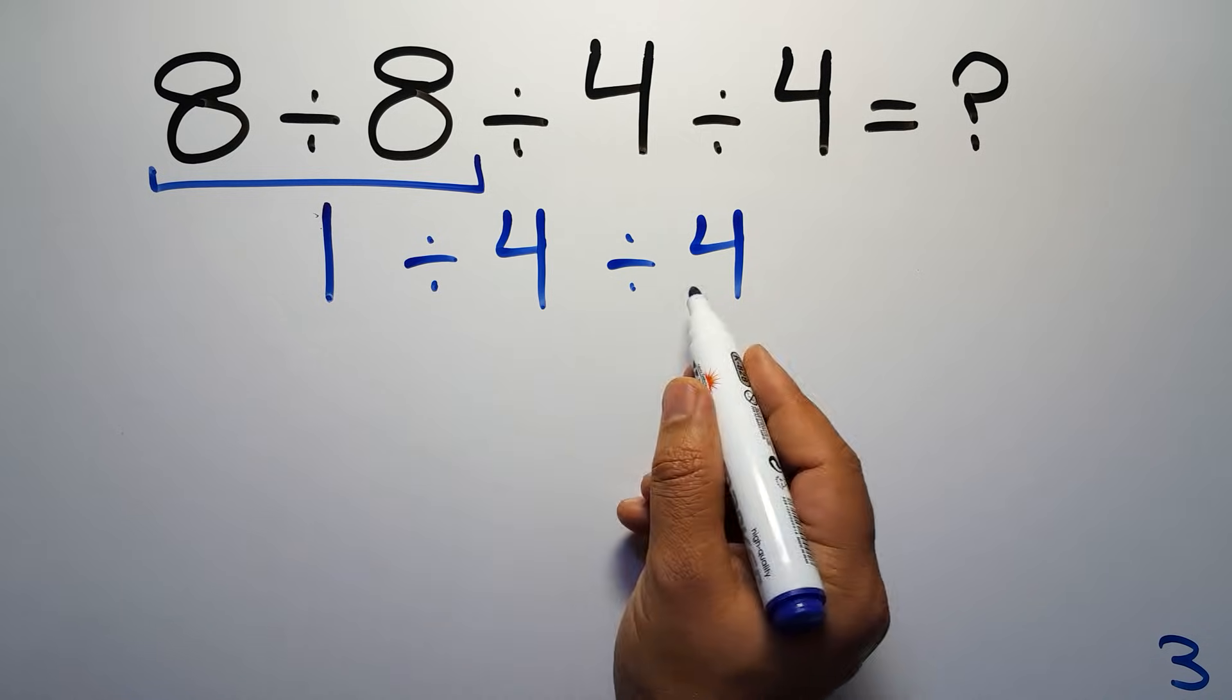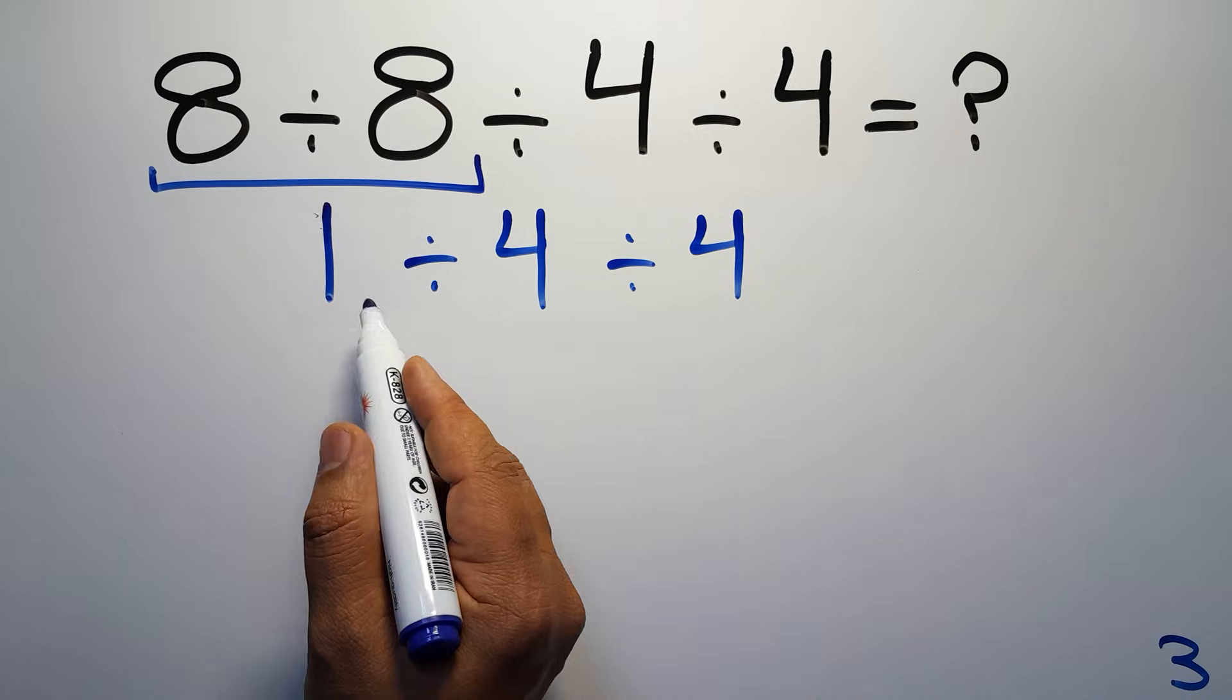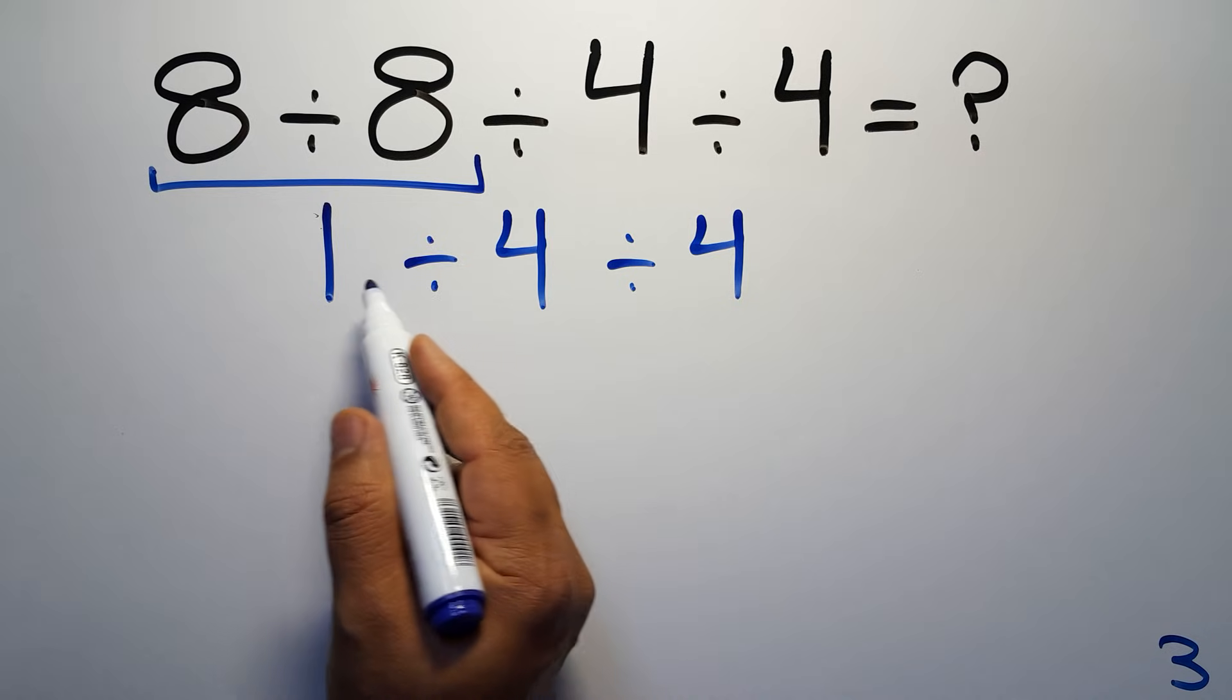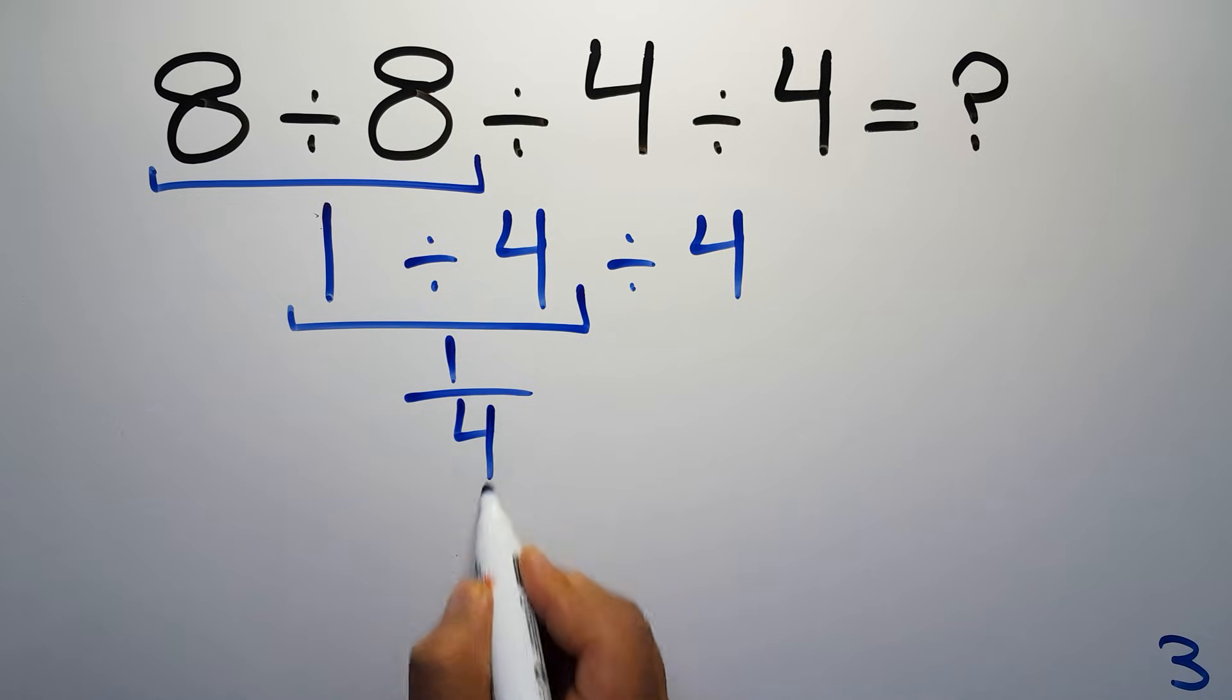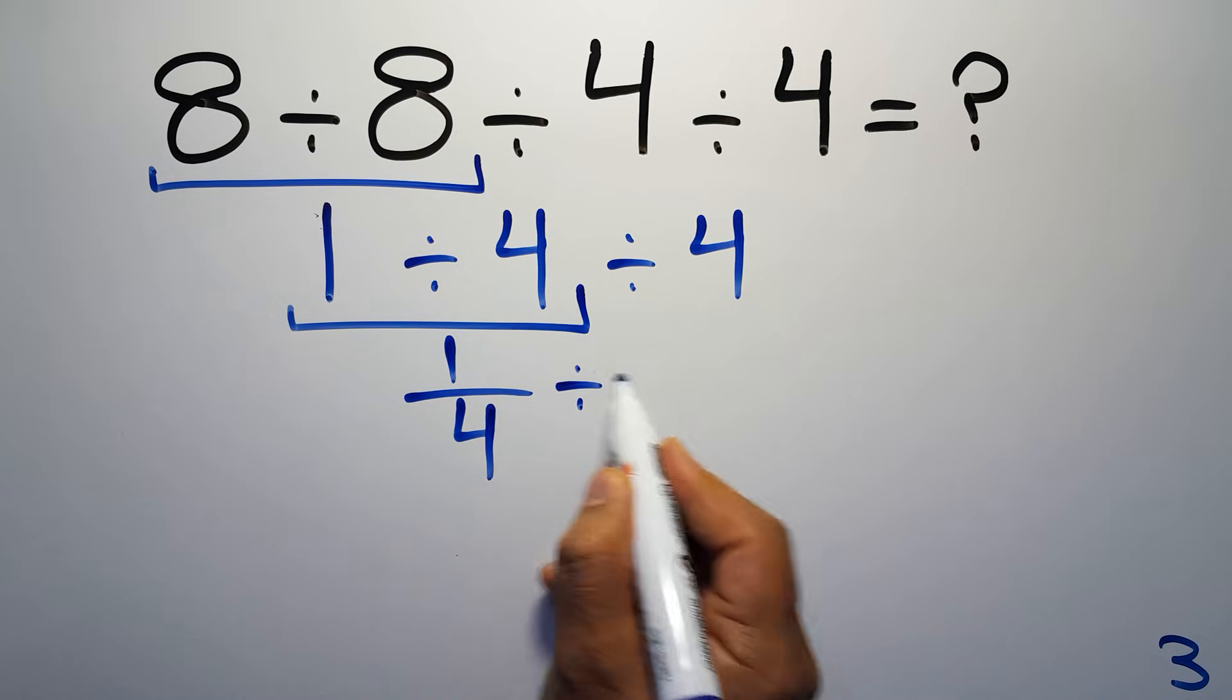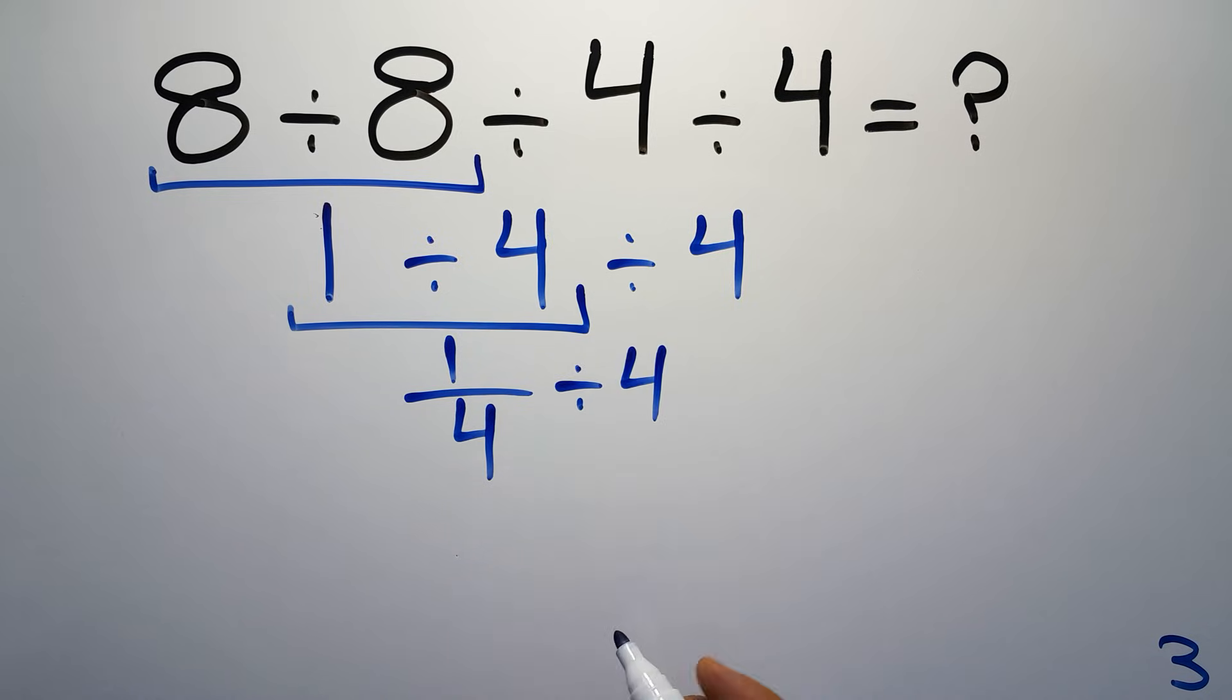So here first we have to do this division: 1 divided by 4 can be written as 1 over 4, then divided by 4. Now according to the KCF rule...